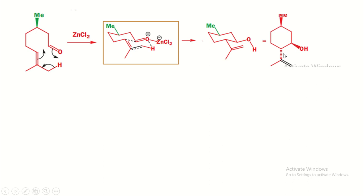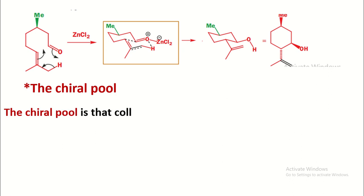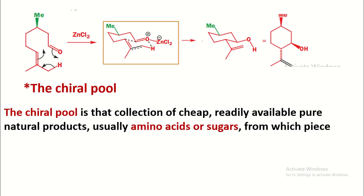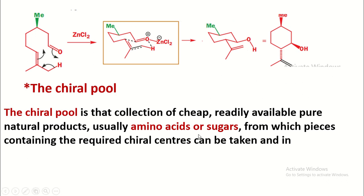Now, what is meant by chiral pool? It is very simple — it refers to starting compounds that are optically active, obtained from naturally generated sugar molecules and amino acid molecules. They are easily obtained from nature and used as reactants to convert into the desired product. Such amino acids and sugar molecules are called the chiral pool.